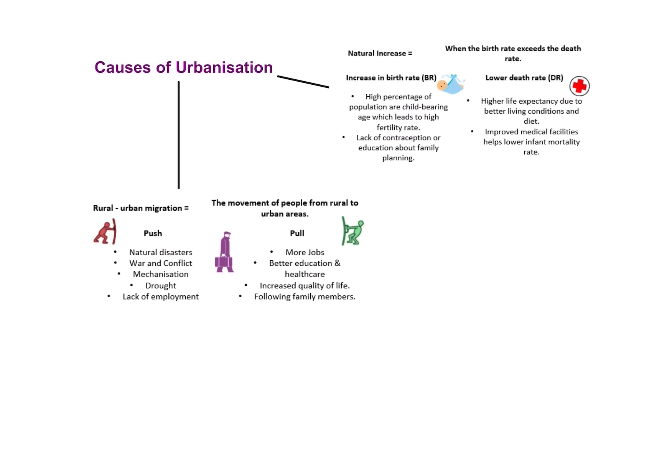What's causing people to move into these urban areas? There are two main causes you need to know for the exam. The first is rural to urban migration — people moving from the countryside into towns and cities, probably because of push and pull factors. Push factors are things that make you want to leave a place, such as natural disasters, drought, and lack of employment. Pull factors are the opposite — having more jobs, a better quality of life.